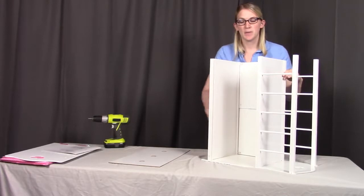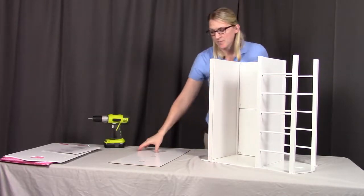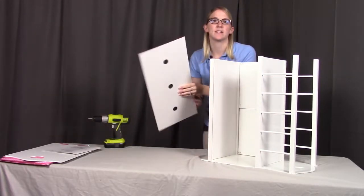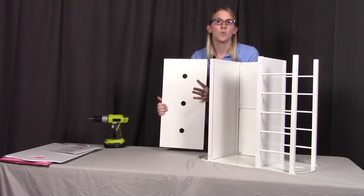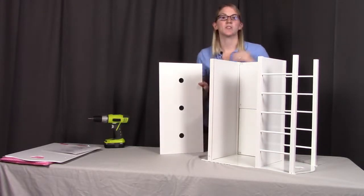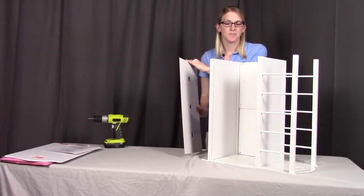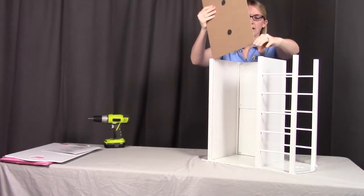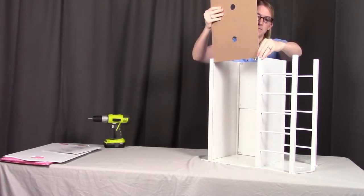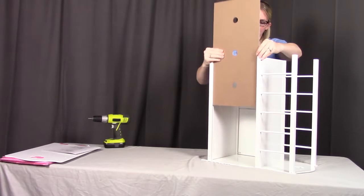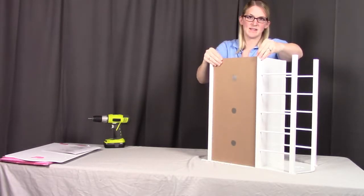Now the last panel we're going to be putting in is the back panel. This is the one that has the three holes in it. What you want is the white to be facing towards the doors and the brown to the back. So we'll put those in the back grooves here and slide those into place.